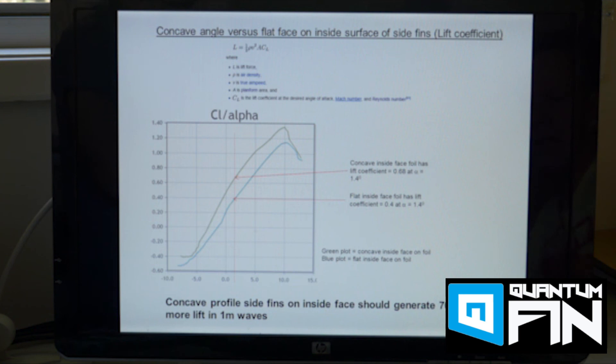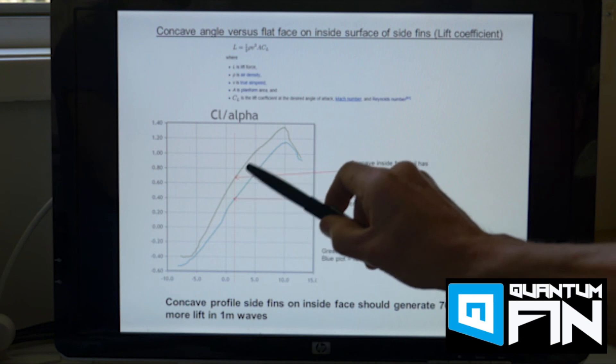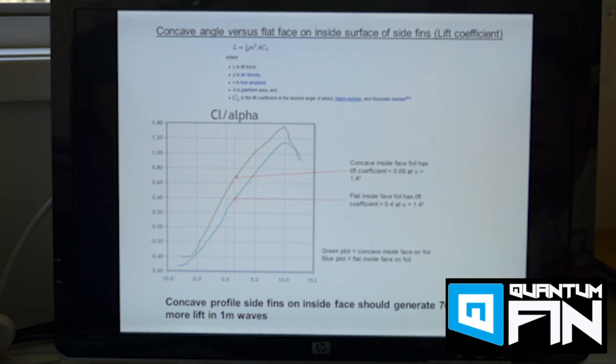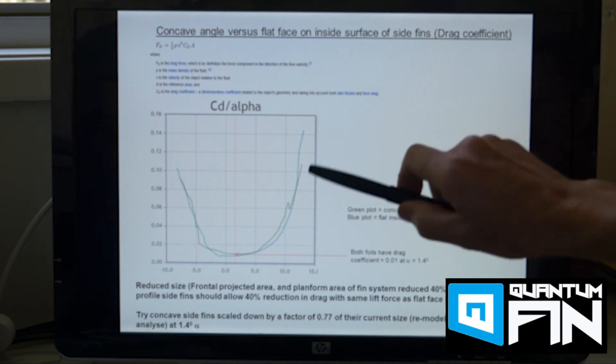Now having said that, the fact that the foil with the concave inside face generates more lift that doesn't occur with any sacrifice in drag.